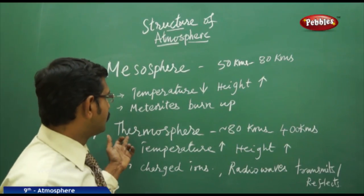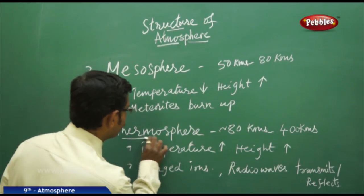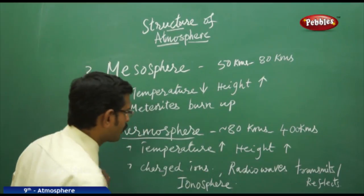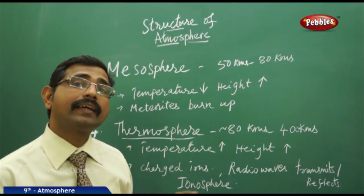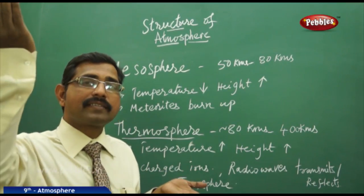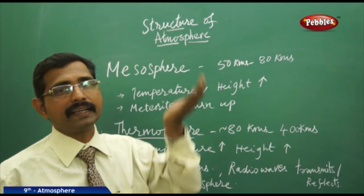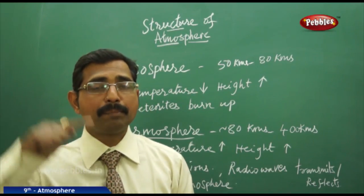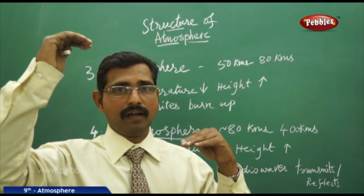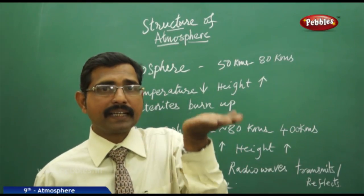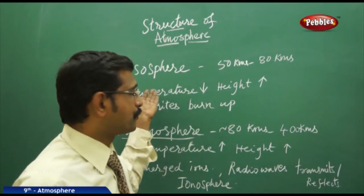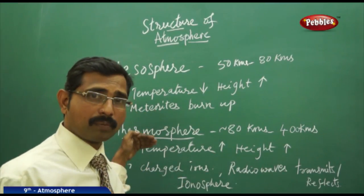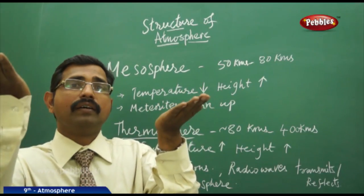To summarize the temperature patterns: in the troposphere, temperature falls as you go upward. In the stratosphere, temperature increases as height increases. In the mesosphere, temperature falls as you go upward. And again in the ionosphere or thermosphere, temperature increases as you increase your height. So the temperature alternates between decreasing and increasing across the layers.